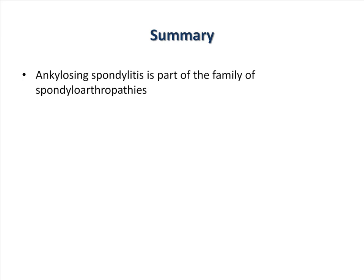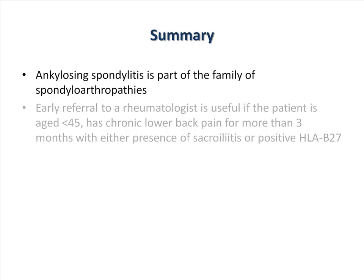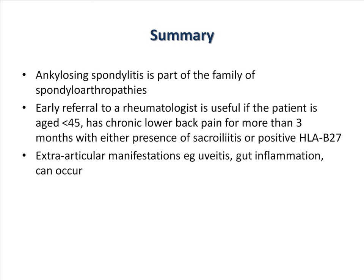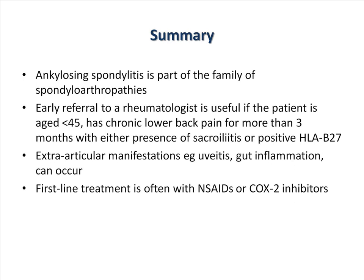In summary, ankylosing spondylitis is part of the family of spondyloarthropathies. Early referral to a rheumatologist is useful if the patient is aged less than 45, has chronic lower back pain for more than 3 months, with either sacroiliitis detected on x-ray or MRI, or positive HLA-B27. Extra-articular manifestations include uveitis and gut inflammation. First-line treatment of ankylosing spondylitis is with NSAIDs or COX-2 inhibitors.